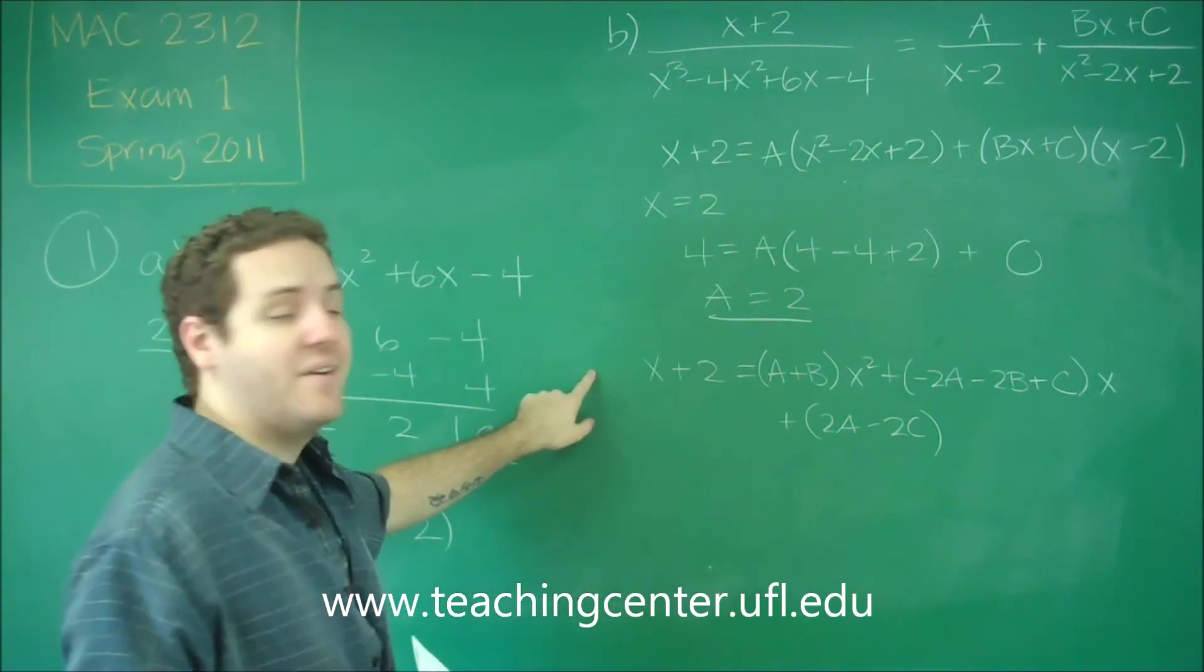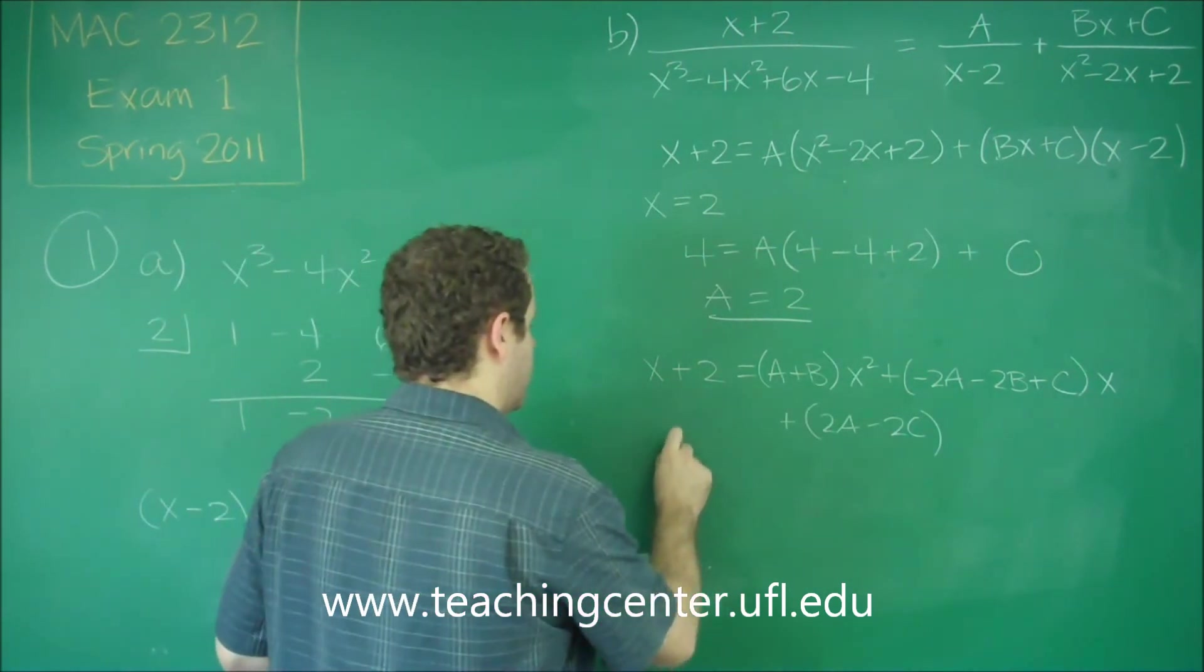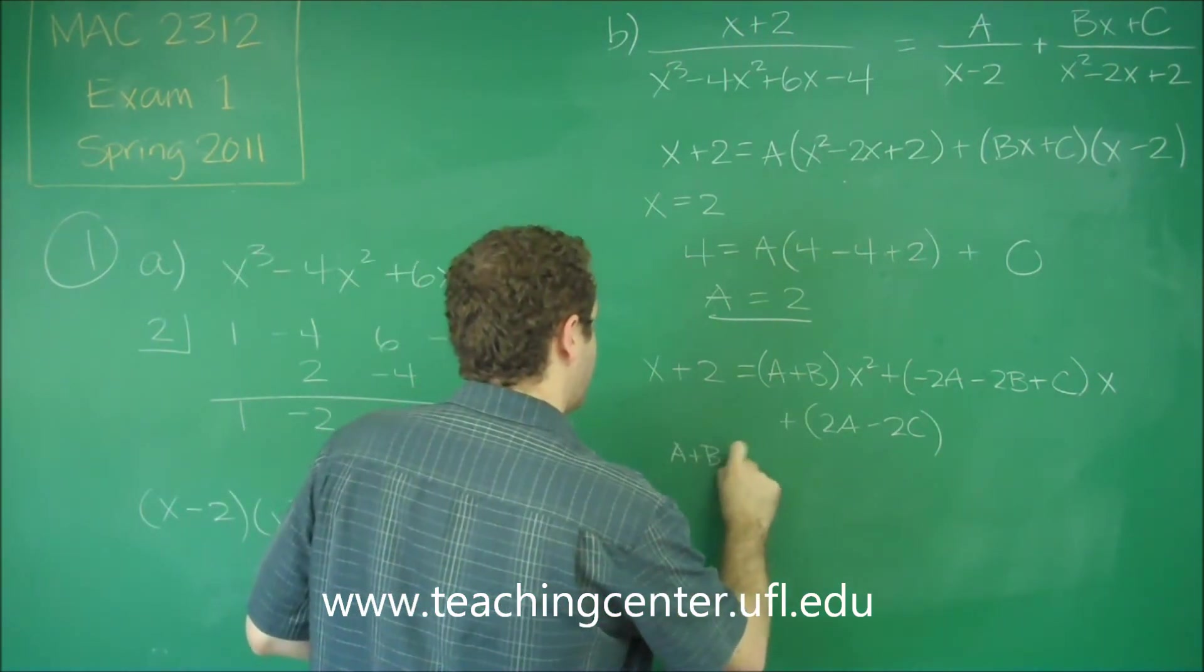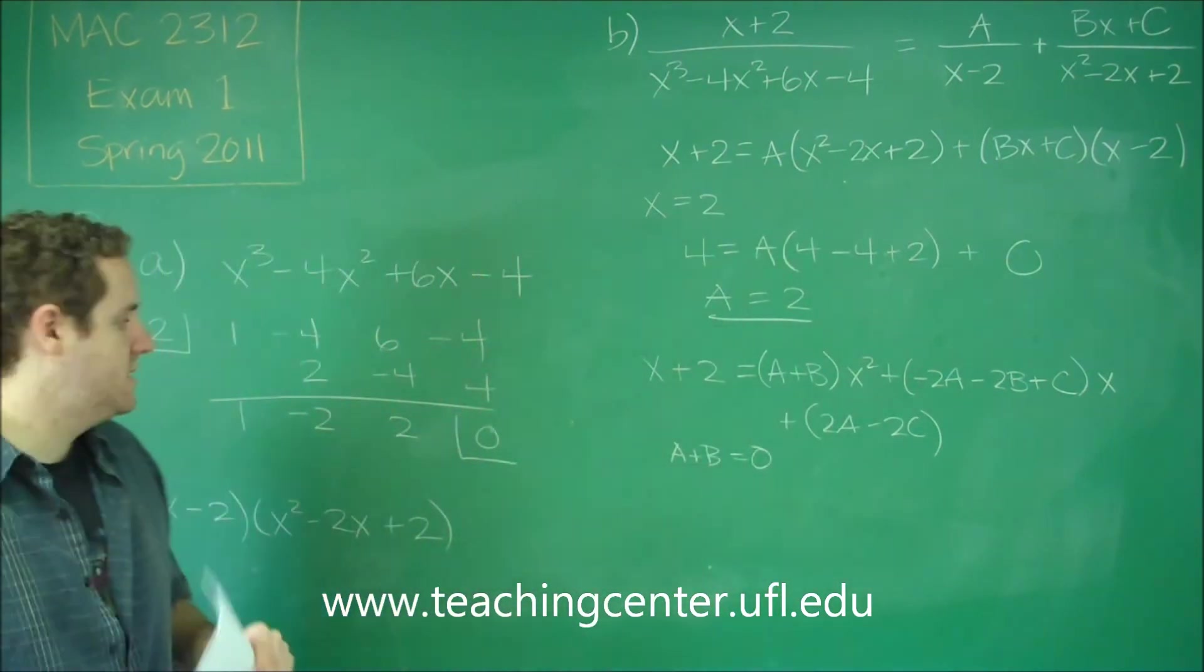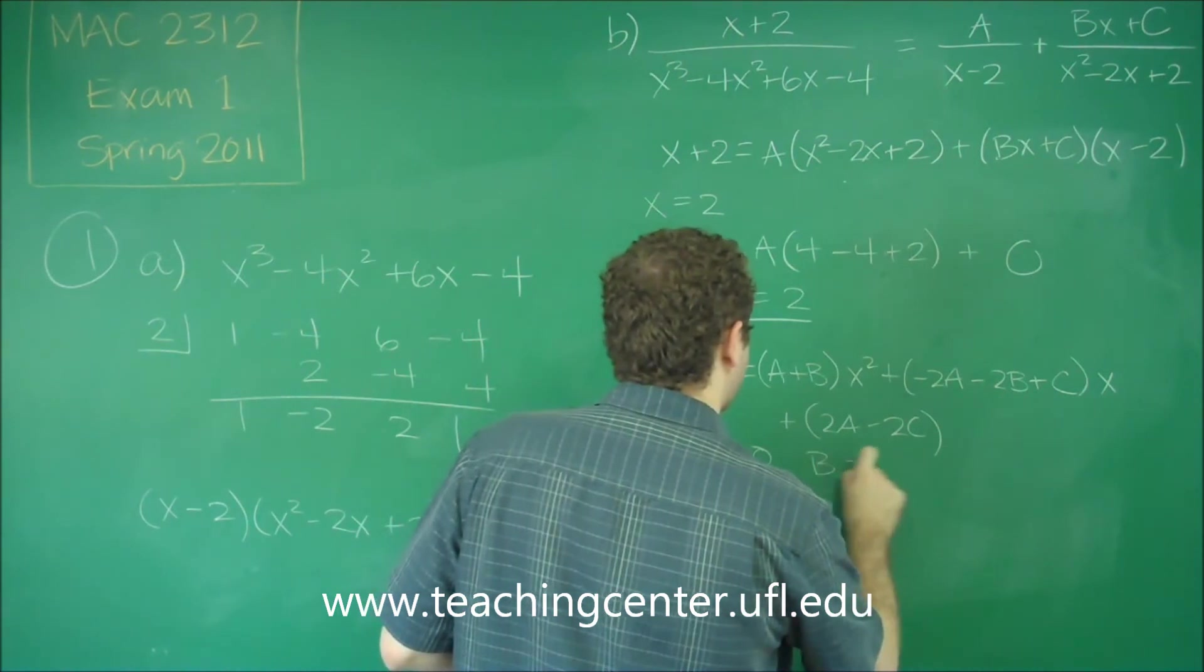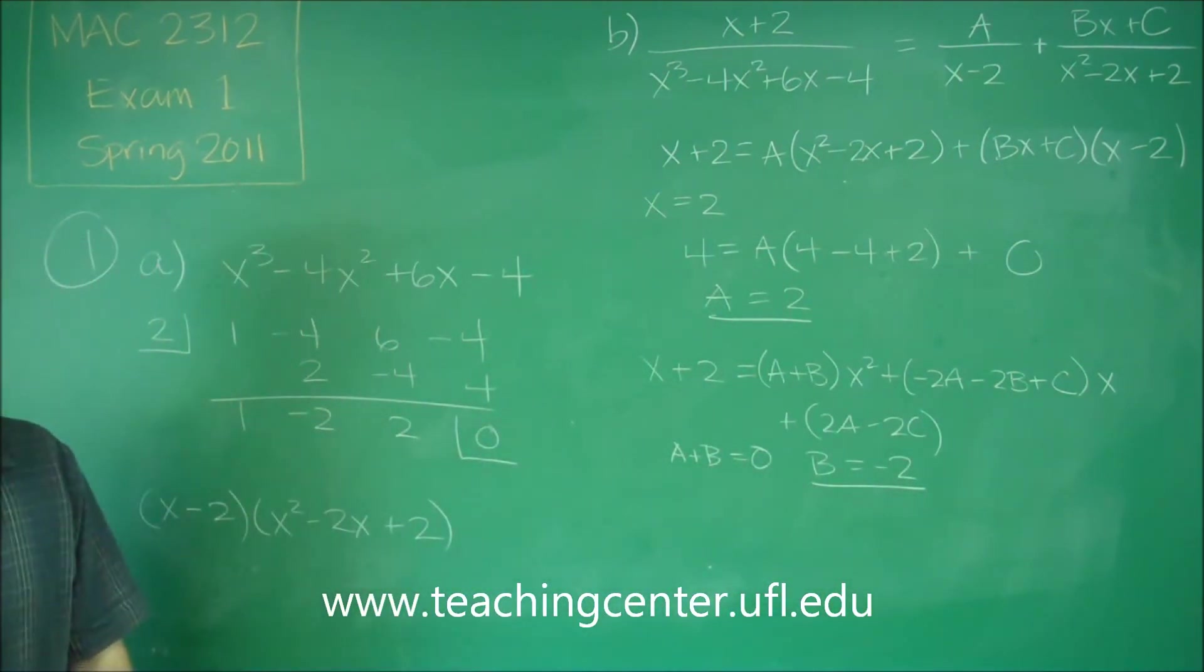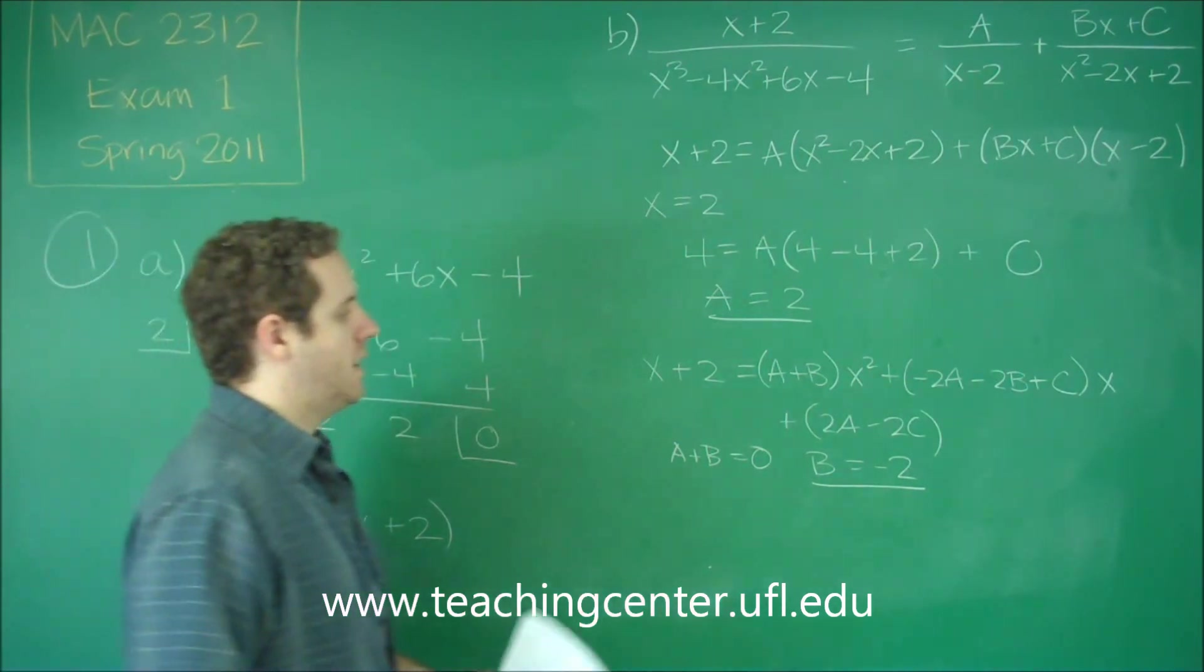You can see here, we don't have an x squared over here. So that tells you that A plus B has to be 0. But if A plus B has to be 0 and we already knew that A is equal to 2, we definitely know then that B is equal to negative 2.